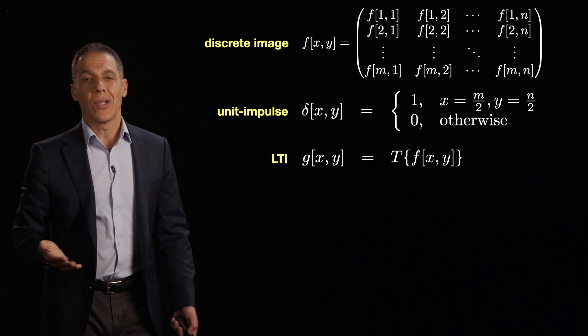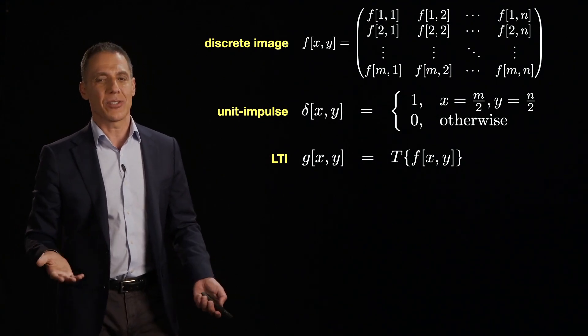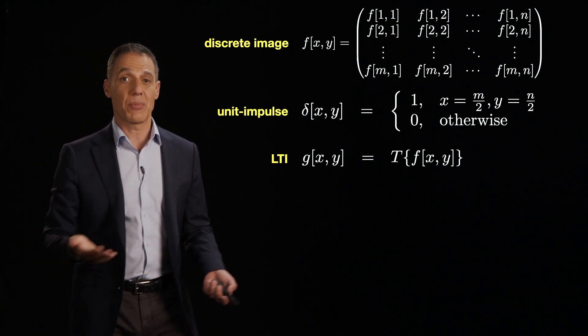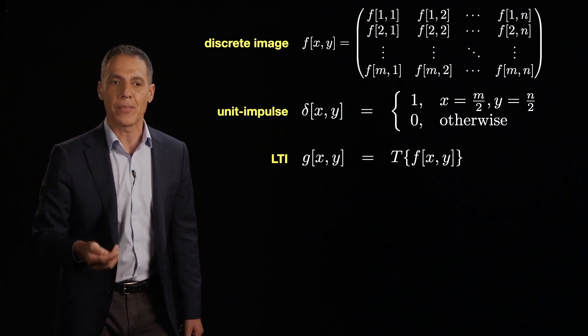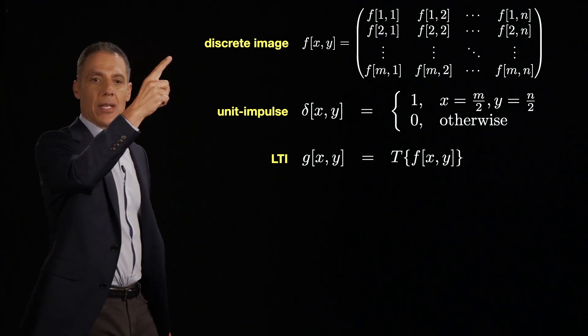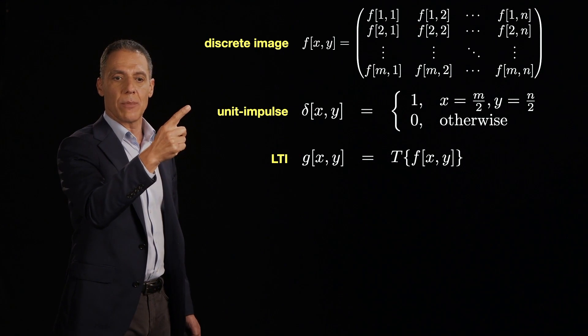Now, what do we know? Well, we have an intuition that the linear time invariant systems for images is going to be pretty similar to signals. And so let's go ahead and play the game. So I've got my discrete time image here, I've got my 2D unit impulse here.